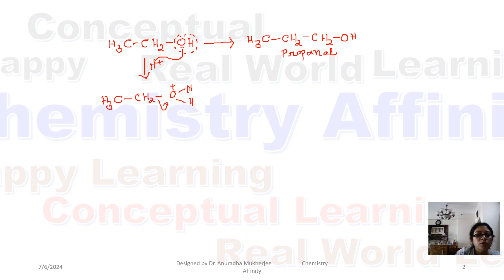Now the leaving group leaves and we have to add some nucleophile. Here we are using sodium cyanide. We know CN- is a very strong nucleophile. So it undergoes SN2 reaction and we are getting CH3-CH2-CN.